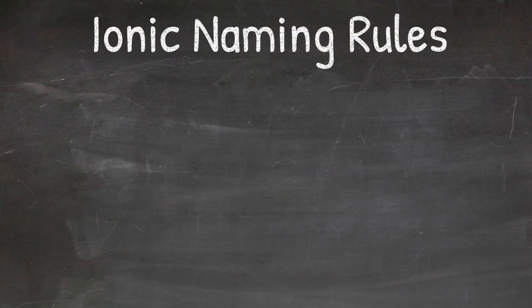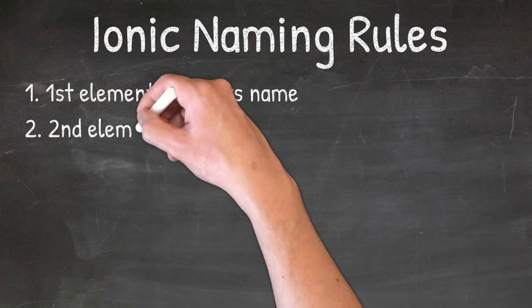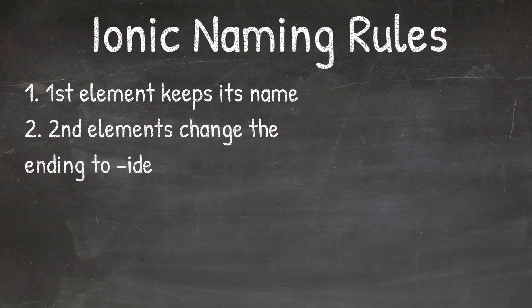Ionic naming can be simplified down to two basic rules. The first rule is the first element keeps its name, and our second rule will be the second element when we change the ending to -ide.